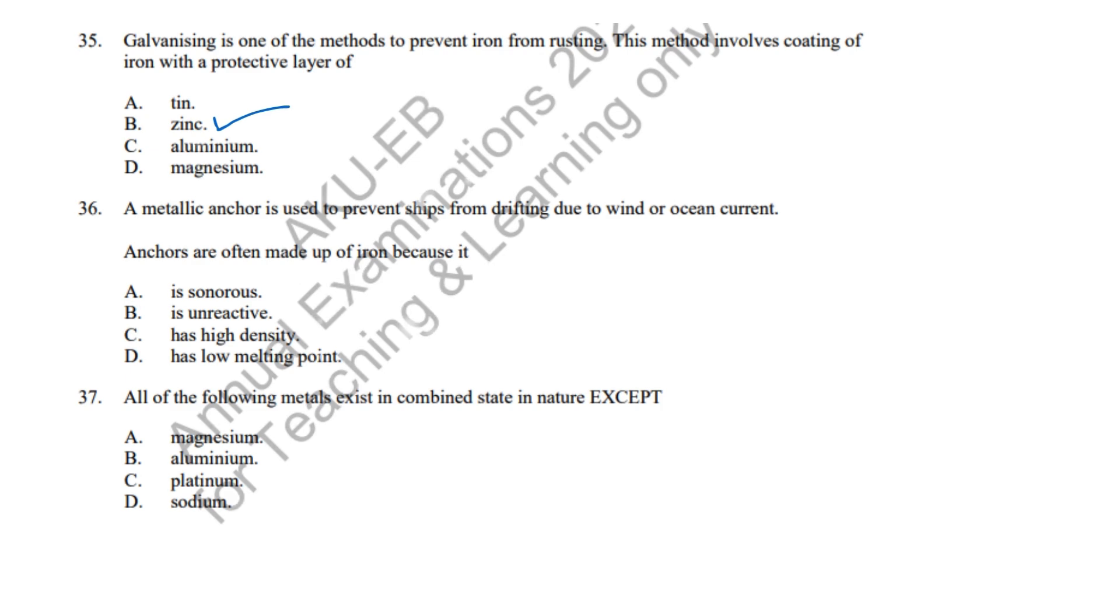Question 36: Iron is used in anchors due to its high density, making it heavy. Correct answer: C, High density. Question 37: Platinum is a noble metal and occurs freely in nature. Correct answer: C, Platinum.